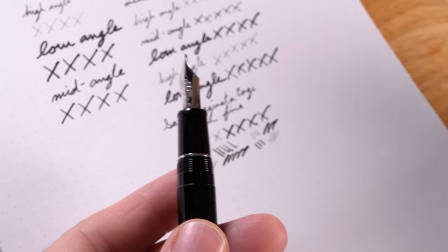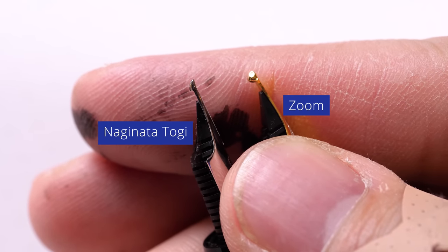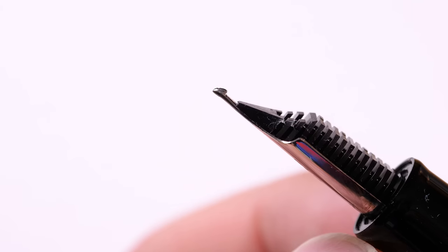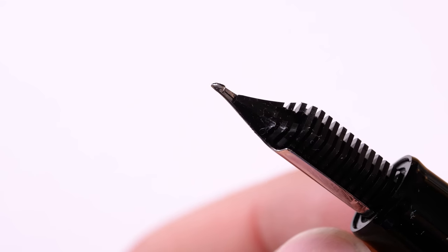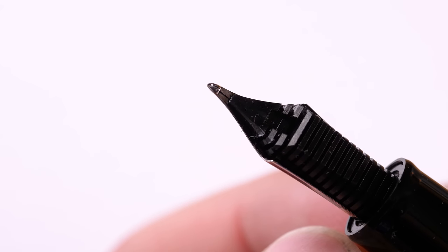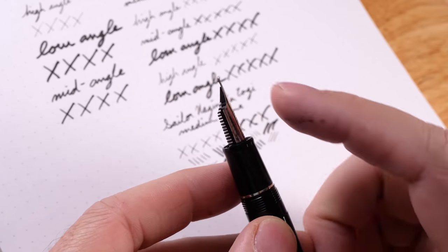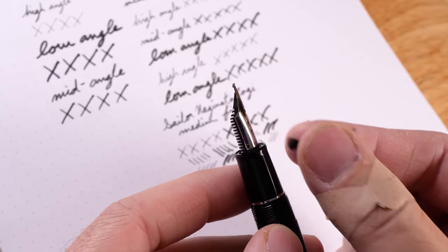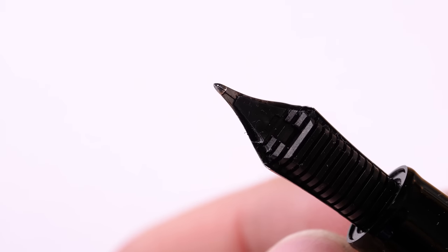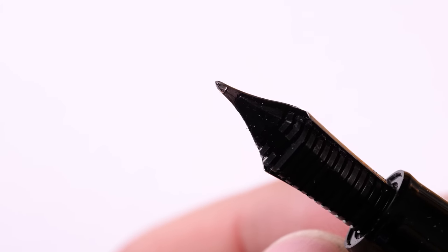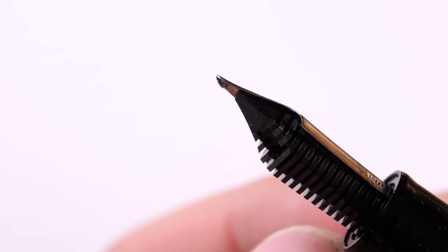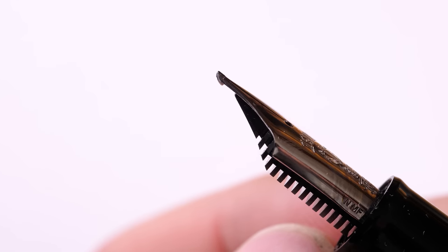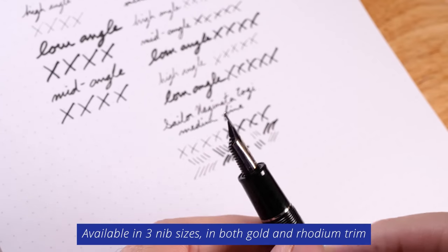The Naginata Togi is sort of a pen that is similar to, if you're familiar with the Architect grind, it's kind of like a cross between an Architect grind and Sailor's zoom nib. So what does that mean? Well, if you look at the tipping material, it's ground so that it tapers a little bit. So you get a little bit of variation between the downstroke and the cross stroke. And then it also writes thinner when it's pointed up and thicker when it's pointed down. And I'll demonstrate all that for you today.